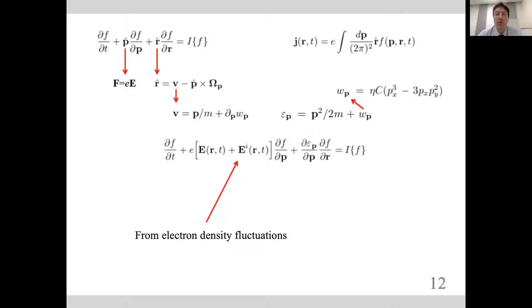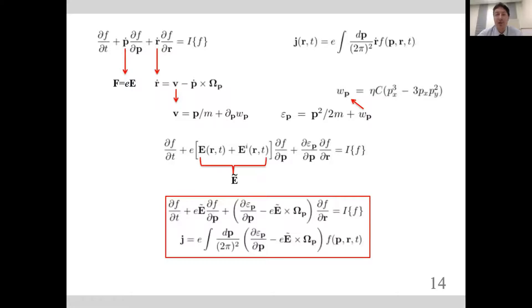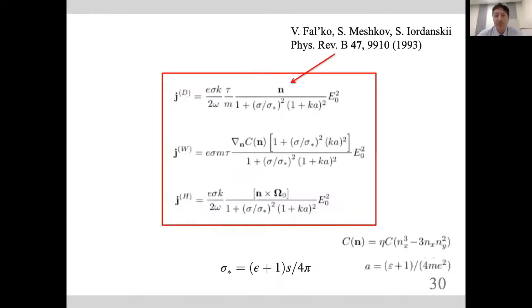We should also account for the induced electric field. The acoustic wave propagating along the crystal creates perturbation of electron density, and electrons start to create an electric field. This is a well-known effect but should be accounted for. After the calculations, we found several components. One is the classical diffusive drag current, which has been reported in other papers and our result coincides with this.